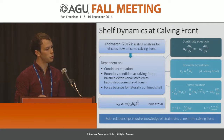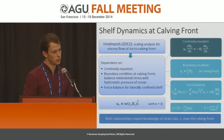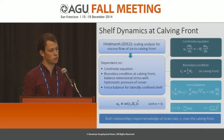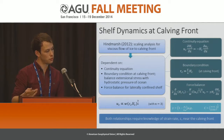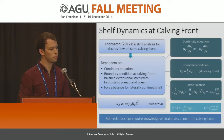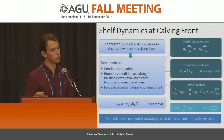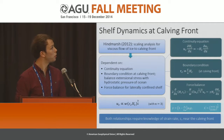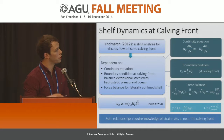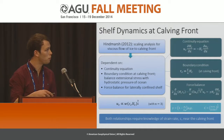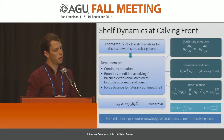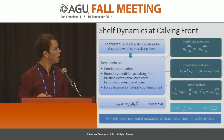The first component is the continuity equation, with the effects of melting neglected. The second is the boundary condition at the calving front, where the extensional stresses at the calving front balance the hydrostatic pressure of the ocean. The third component is the force balance equation for a laterally confined ice shelf, where all quantities with subscripts C denote quantities measured along the center line. The force balance equation stems from considering the force balance for an ice shelf flowing in the x direction only, where transverse shear is linearly proportional to transverse position.